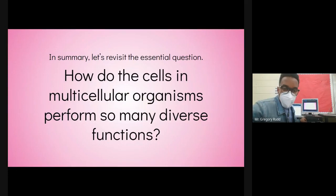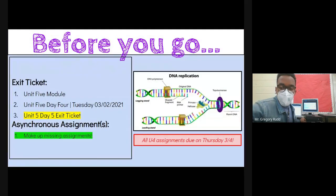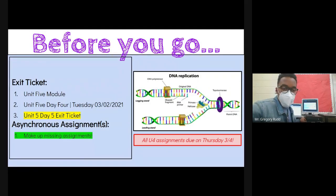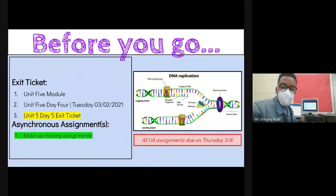The essential question was: how do cells in multicellular organisms perform so many diverse functions? The answer is cell specialization and gene regulation — certain genes are turned on while others are turned off. Don't forget the unit 5, day 5 exit ticket: five quick questions you should go ahead and knock out.